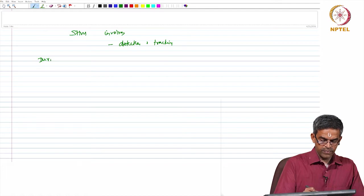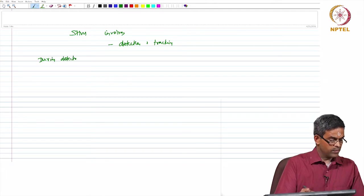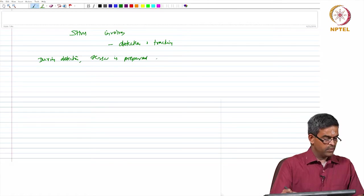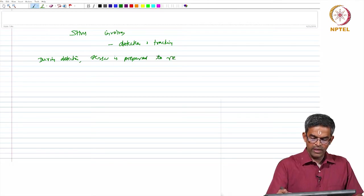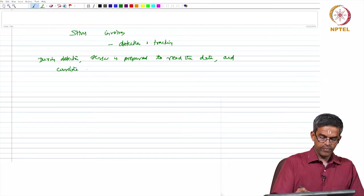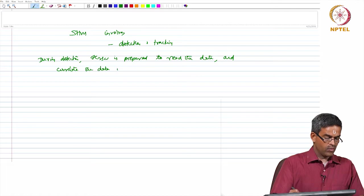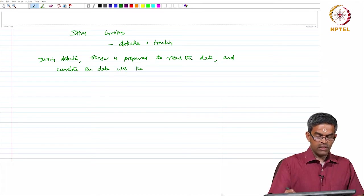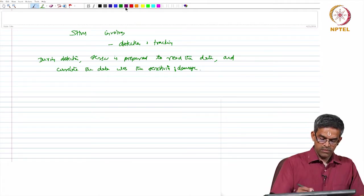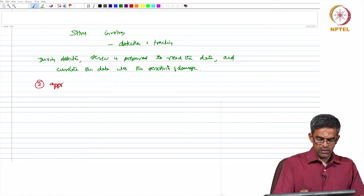During detection, the sensor is prepared to read the data and correlate the data with the sensitivity of damage. There are two approaches by which this can be done.